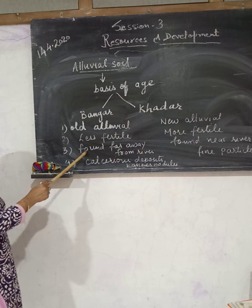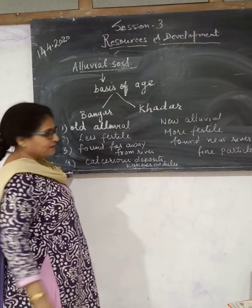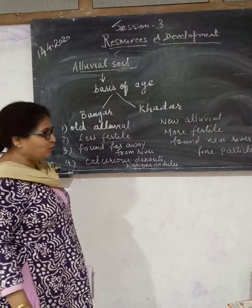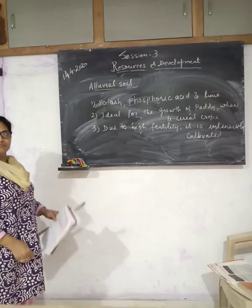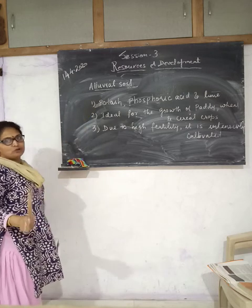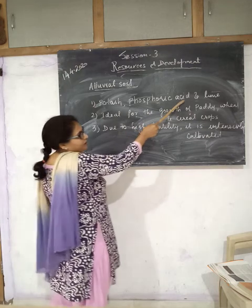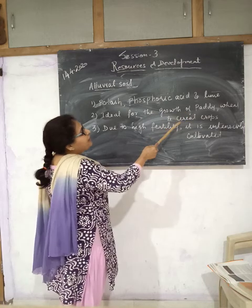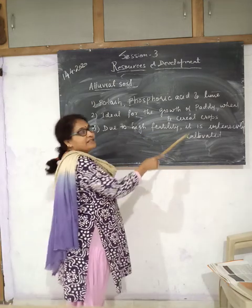This old alluvial soil, Bangar, is found far away from the river banks and contains calcareous deposits, that is Kankar nodules. But Khadar contains fine particles. Alluvial soil as a whole is highly fertile and contains potassium, phosphoric acid, and lime. It is ideal for the growth of paddy, wheat, and cereal crops. Due to its high fertility, it is intensively cultivated.